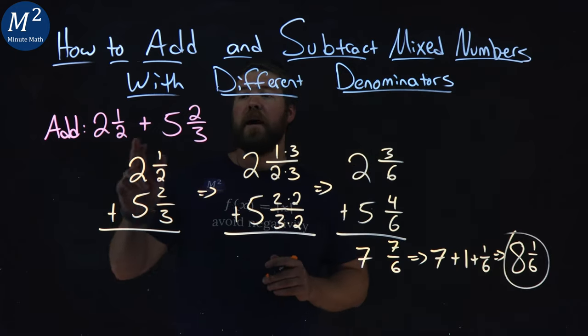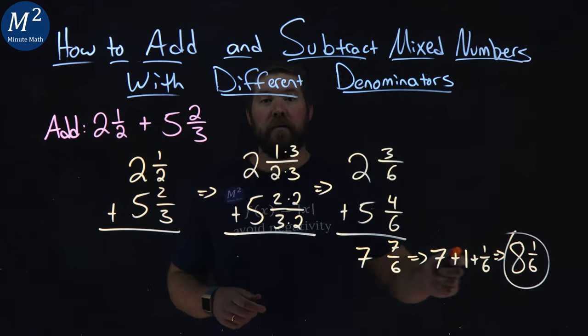And there we have it. 2 1/2 plus 5 2/3 comes out to be 8 1/6.